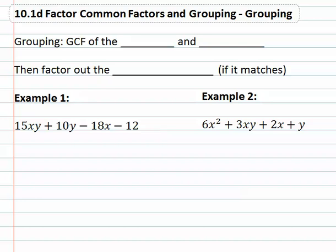One method we use, if there are four terms in the problem, is grouping. Grouping means we find the GCF of the left and right sides. Then we can factor out the binomial GCF, if it matches.